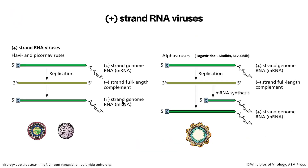We're going to talk first about plus-stranded RNA viruses and their modes of reproduction. The picornaviruses — typified by poliovirus — are plus-strand RNA viruses. Flaviviruses such as West Nile virus, dengue virus, and Zika virus reproduce in the same way. They have a plus-strand RNA genome which is a messenger RNA. It can be translated directly, or it's replicated through a minus-strand full-length complement to get more plus-strands. That minus-strand is thrown away — it's not used for anything except to make more plus-strands.